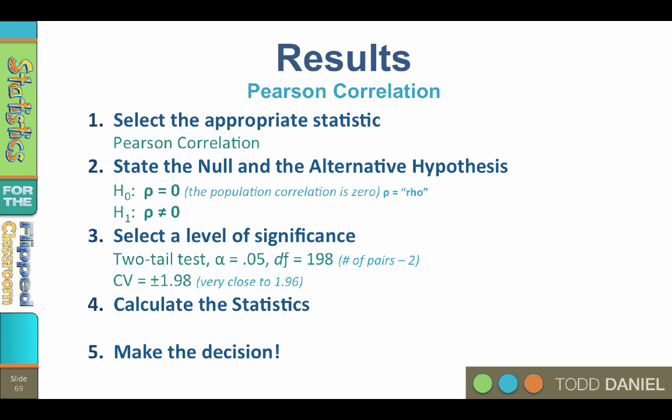You will notice that this critical value is very close to 1.96, the critical value for a z-test, and that is because our sample size is so large. Step four: calculate the statistics. For that, we will turn to SPSS.